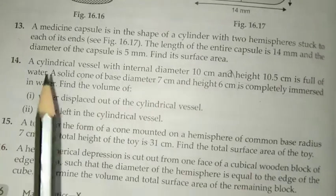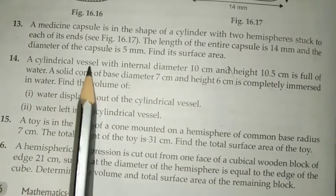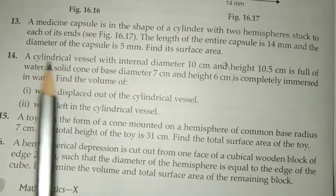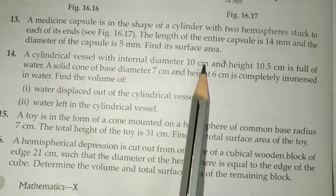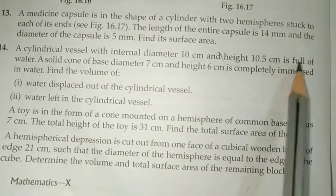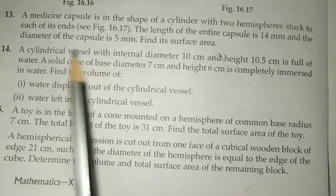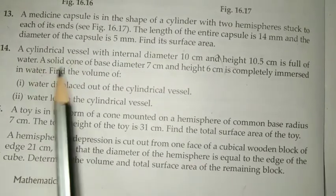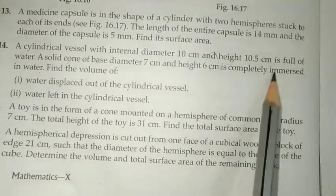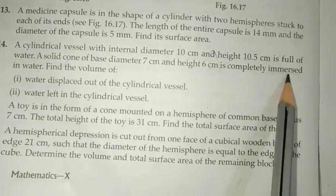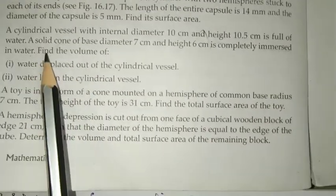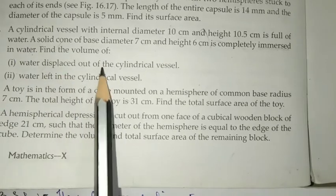Now, let's take a look at question number 14. A cylindrical vessel with internal diameter 10 cm is given. If diameter is given, you can find radius, right? And height is also given, is full of water, okay?